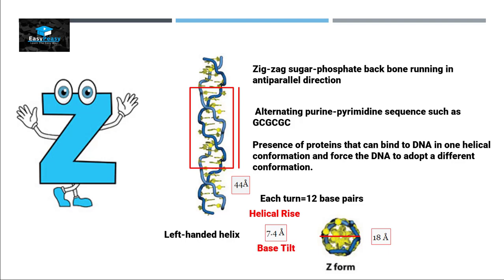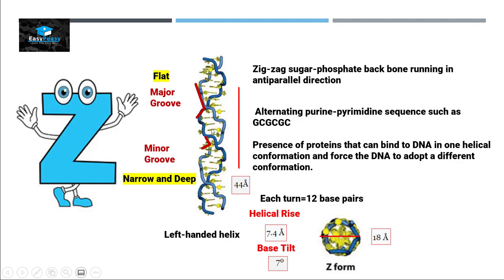The helical rise in Z form is 7.4 angstroms. The base tilt is 7 degrees. The major groove is flat, as you can see it is not even a greater sign now, and the minor groove is narrow and deep, so it is narrow, not that wide, but it is deep inside the helix.